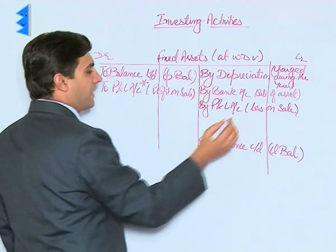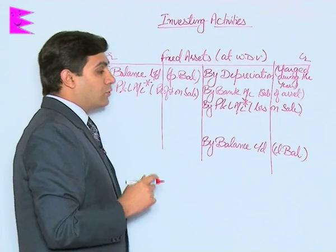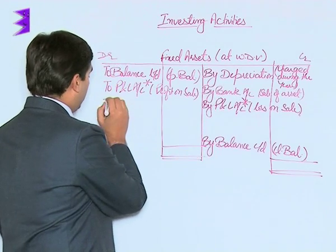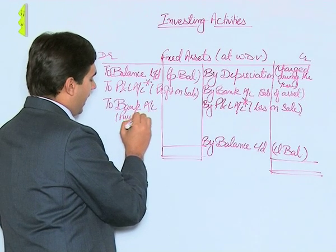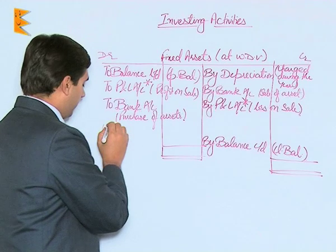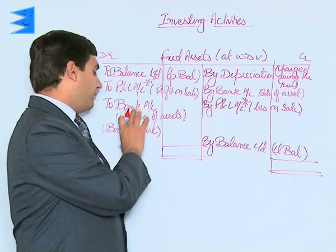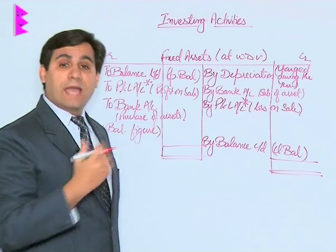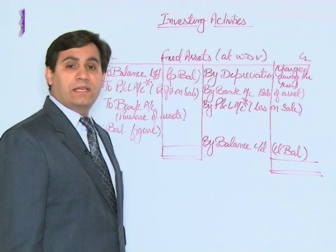These entries are marked with a star as only one of them will appear — either profit or loss. Once these entries have been made, we balance out the account and find the balancing figure, which in this case would be purchase of assets during the year. If the purchase amount is already given, then depreciation, sale, or loss can be the balancing figure. But mostly it is the purchase that is not given, so it is taken as the balancing figure.